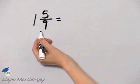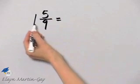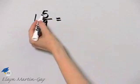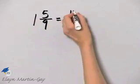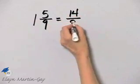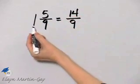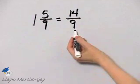So let's go ahead and write this as an improper fraction. 9 times 1 is 9, plus 5 is 14. Haven't done anything yet. Simply wrote the mixed number as an equivalent improper fraction.